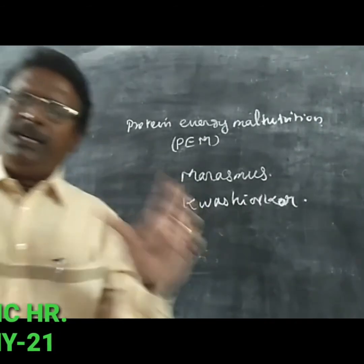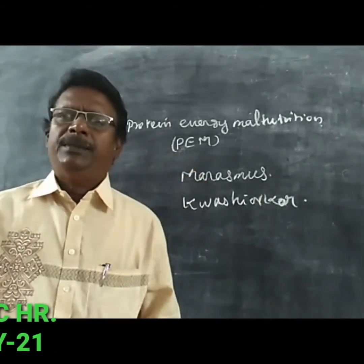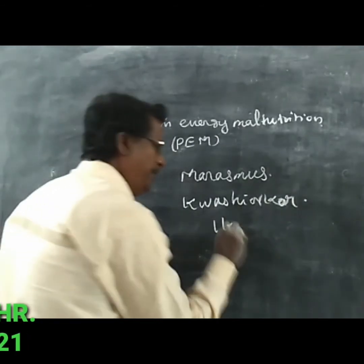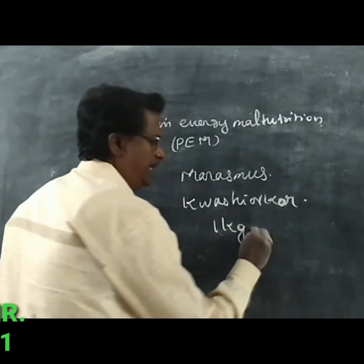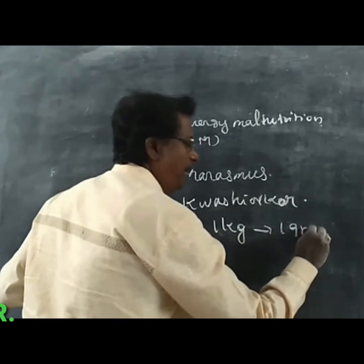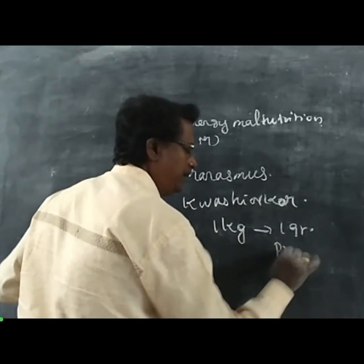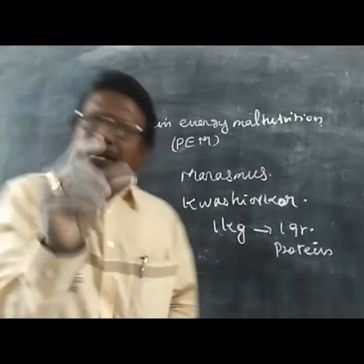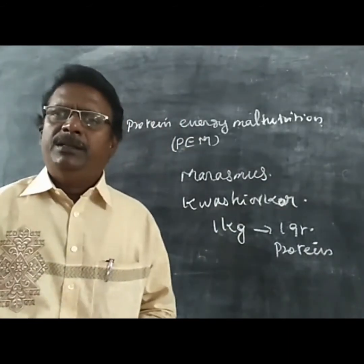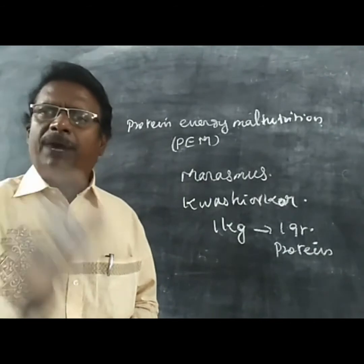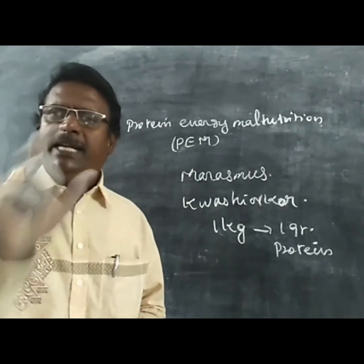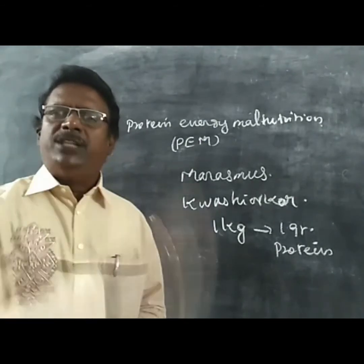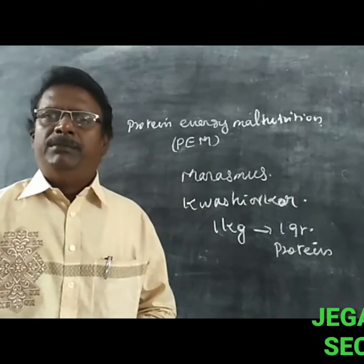What quantity of protein is needed in human life? Per 1 kg of body weight, they need 1 gram of protein per day. This is recommended by the World Health Organization.